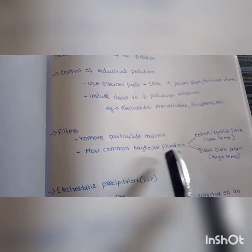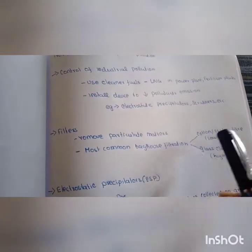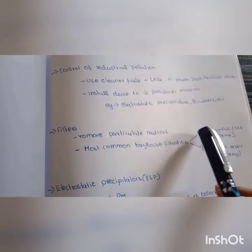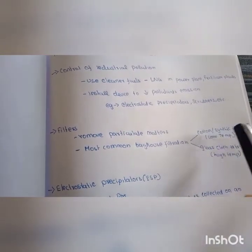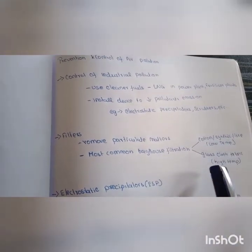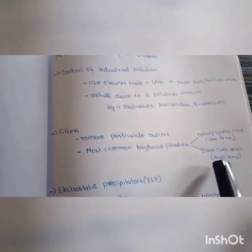Mostly baghouse filtration, that's the main use. There are two types: cotton and synthetic fibers for low temperature, and glass cloth fabric for high temperature.